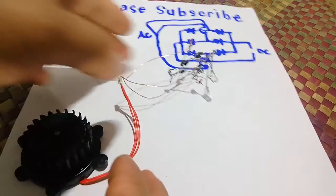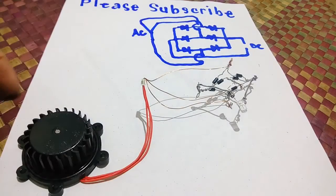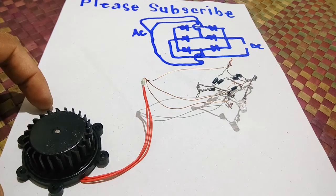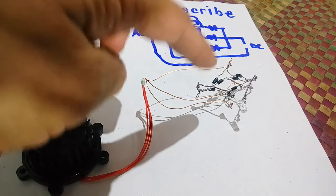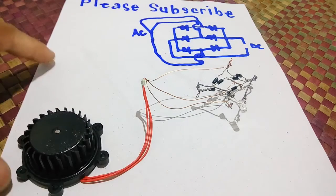That's basically how we convert AC, 3-phase AC to 3-phase DC using bridge diodes. So, thank you for watching.